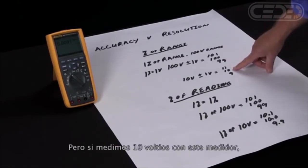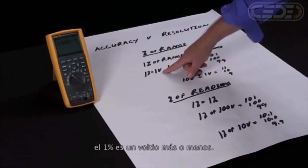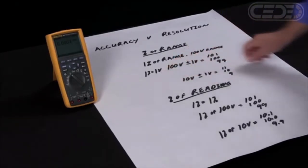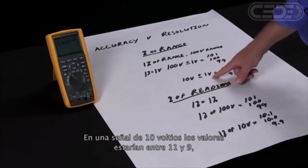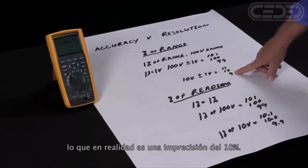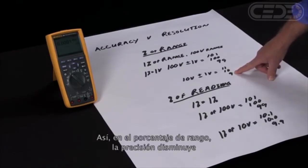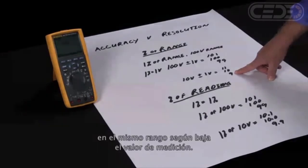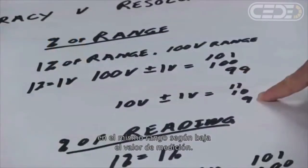But if we're measuring ten volts on this same meter, the one percent is plus or minus one volt. On a ten volt signal, plus or minus one volt gives us between nine and eleven, which is actually an inaccuracy of ten percent. So with percent of range, the accuracy actually decreases on the same range as you go down with the measurement values.